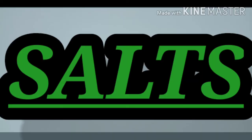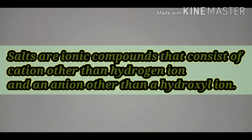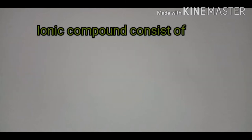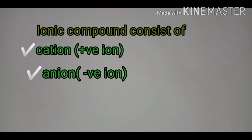Let us start with the definition of salt. A salt is an ionic compound which contains a positive ion or cation other than hydrogen ion, and a negative ion or anion other than a hydroxyl ion. An ionic compound consists of a positive ion called a cation and a negative ion called an anion. So salt is an ionic compound.